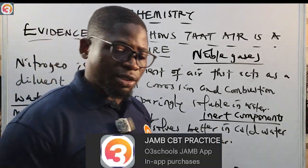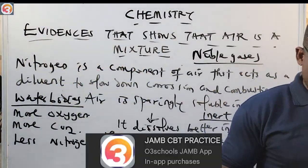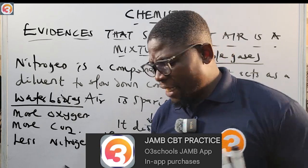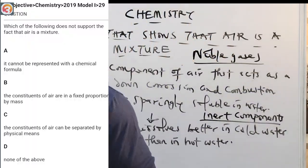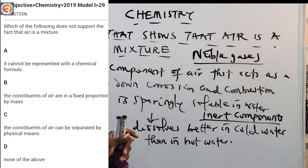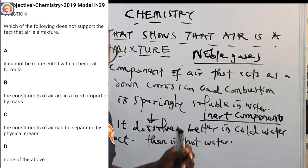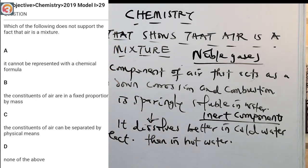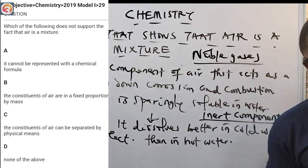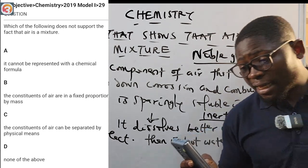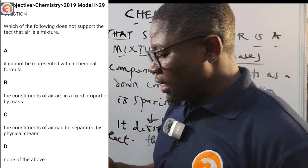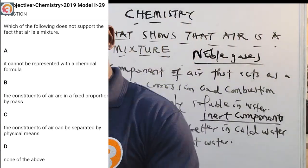Now, let's go to the O3School Jam app. For that 2019 question number 29 — which of the following does not support the fact that air is a mixture? — option A says it cannot be represented with a chemical formula. Can it be represented with a chemical formula? No, so A supports the fact that it is a mixture.